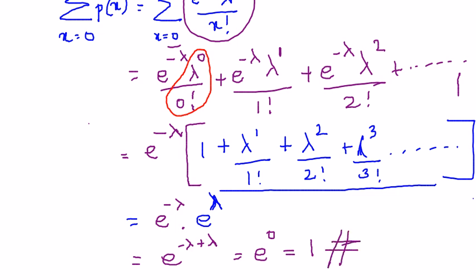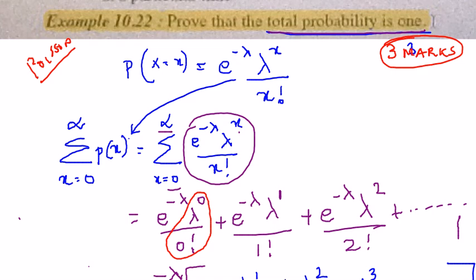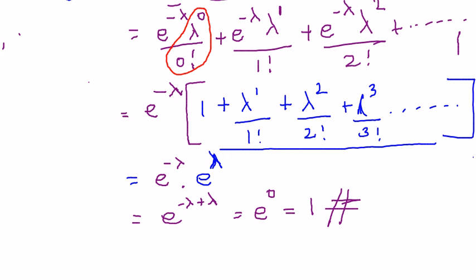And this is what we were asked to prove. The total probability is 1, so this is what we have proved by Poisson distribution. It is quite a simple sum to follow.